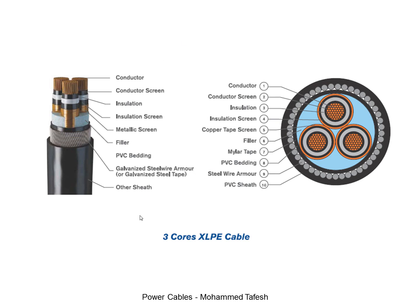This is a three-core XLPE cable, consisting of three conductors inside. Each conductor has a conductor screen, insulation, insulation screen, and metallic screen inside, along with a common filler. They share common elements: galvanized steel wire armor or galvanized steel cap, and one common PVC jacket or PVC outer cover.